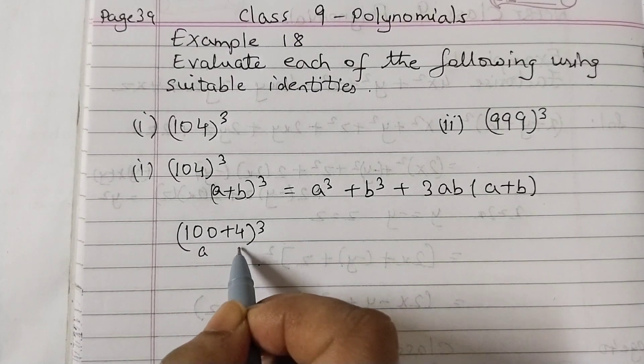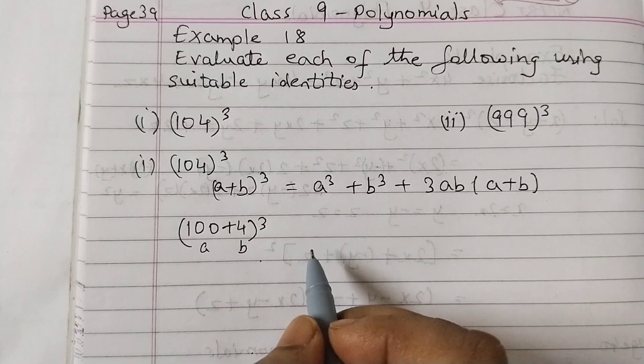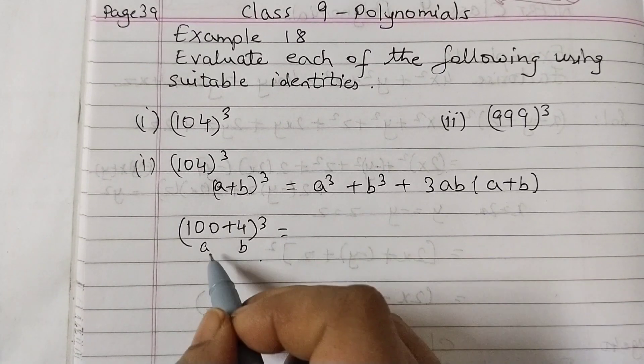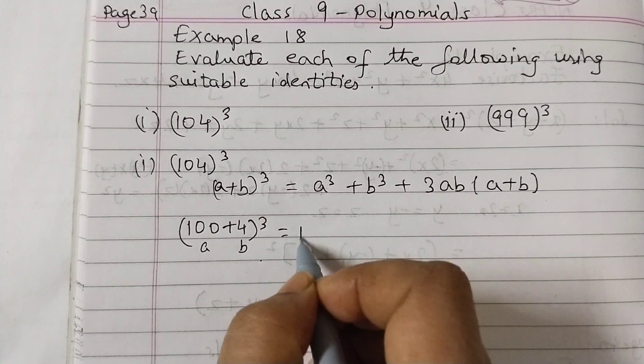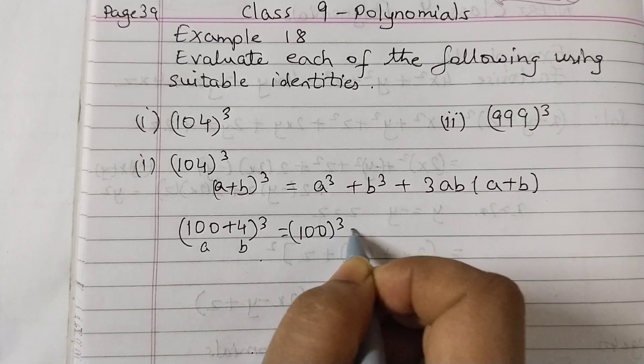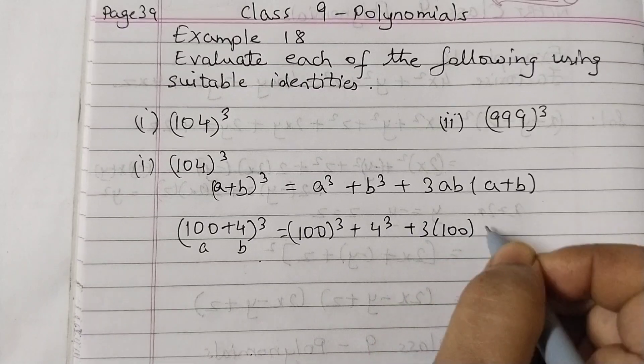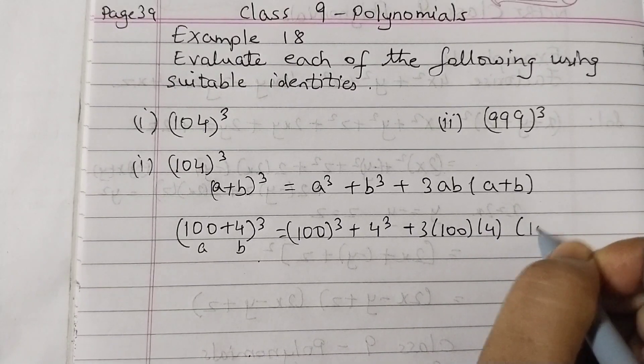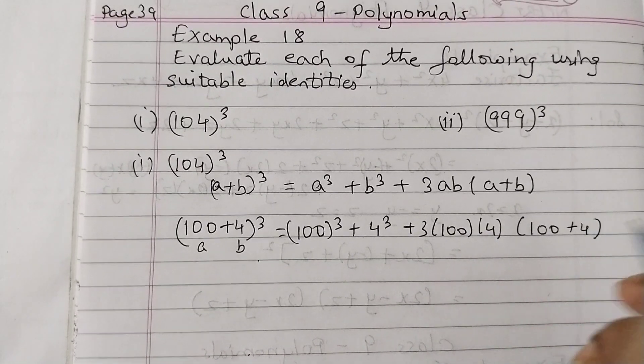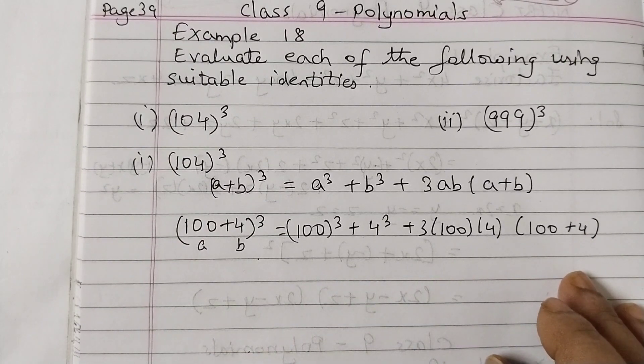So a is 100, b is 4, and now we will replace a by 100 and b by 4. So 100 cubed plus 4 cubed plus 3 into 100 into 4 times 100 plus 4. Now you just need to simplify this.